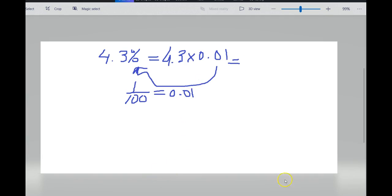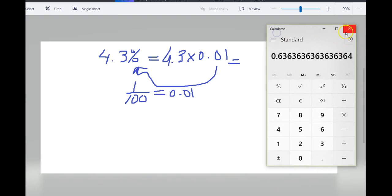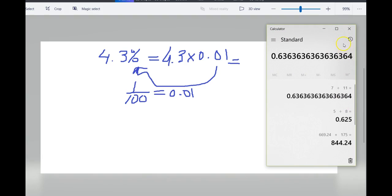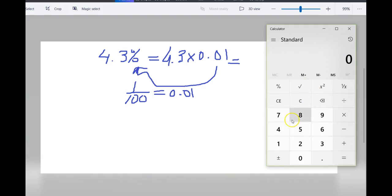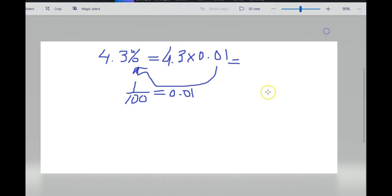If you multiply this in your calculator, let's see, just to make sure we're gonna double check ourselves. We get 0.043. And that's our decimal.